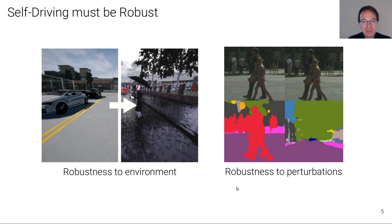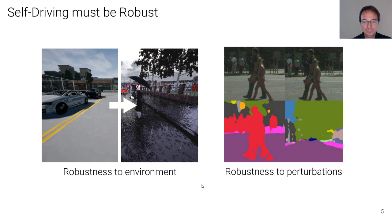There are several types of robustness we might look for, but two important types are: robustness to changes of the environment, like training an agent in one environment and deploying it in another, and robustness to tiny imperceptible adversarial perturbations of the image that significantly alter the classification results. Let's first have a brief look at robustness to the environment.